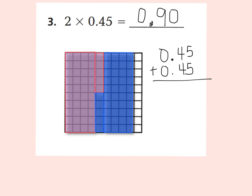And of course, if you want to check it with addition — because multiplication is just repeated addition — I have 2 groups of 45 hundredths and can add it like this. 5 hundredths plus 5 hundredths is 10 hundredths. Remember, we're going to have to regroup 10 hundredths to have 0 in my hundredths place and 1 group of tenths. Now let's add our tenths place: 4 tenths plus 4 tenths plus 1 tenth is 9 tenths. So 90 hundredths is the same answer as our model answer.